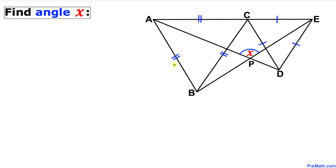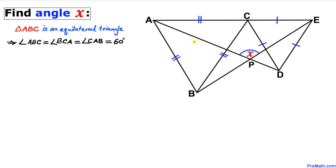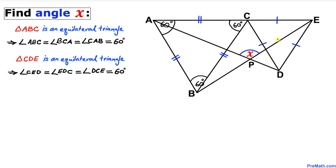Let's get started with the solution. In our first step, let's focus on triangle ABC. We can see that this is an equilateral triangle since all of its side lengths are equal. Therefore we conclude that angles ABC, BCA, and CAB are all 60 degrees each.